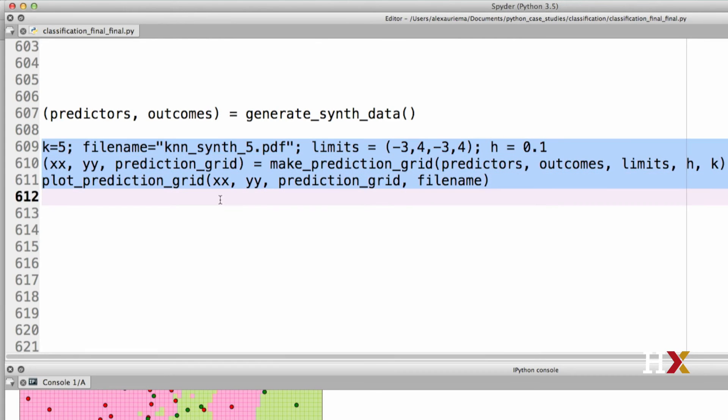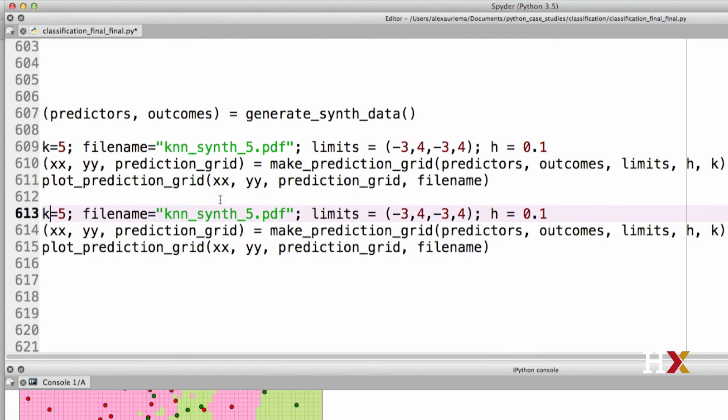We can then repeat this and rerun the same code for k equal to 50. We'll just make sure to update the file name here as well. Let's then run these three lines of code.